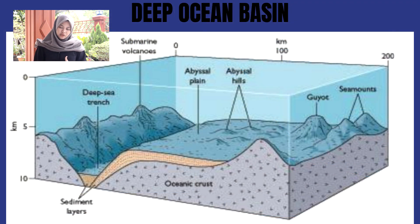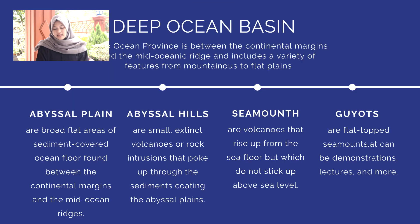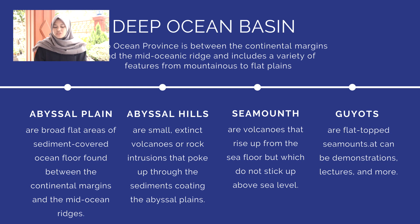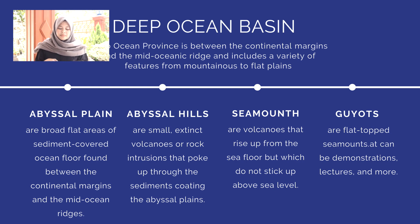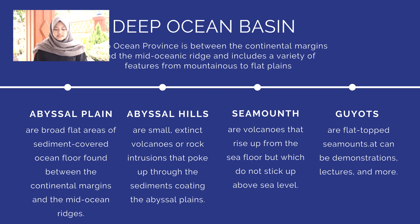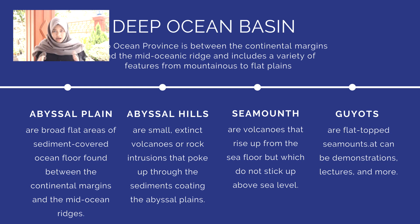Next, we can explain about the ocean basin. We can know that the ocean basin province is between the continental margins and mid-ocean ridges, and includes a variety of features from mountainous to flat plains. Some parts of the ocean basin: first is abyssal plains, which are broad flat areas of sediment-covered ocean floor found between the continental margins and the mid-ocean ridge. The second is abyssal hills, which are small extinct volcanoes or rock intrusions that poke up through the sediments coating the abyssal plains. The third is sea mounts, which are volcanoes that rise up from the seafloor but do not reach sea level.